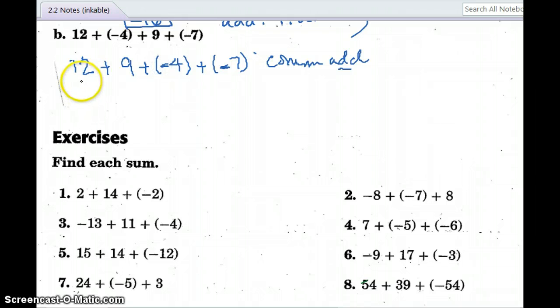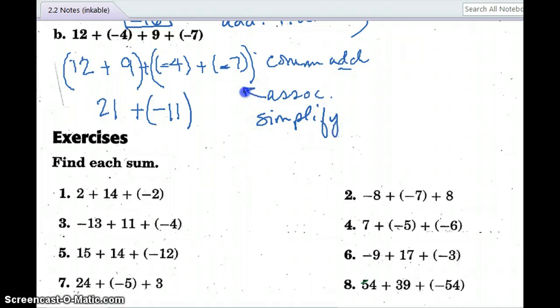Commutative property of addition. Yes, I'm adding, even though there's negatives there, I'm adding negatives. Now we can use the associative property. Let's associate 12 with 9 and negative 4 with negative 7. So the associative property allows me to group this way. And 12 plus 9 is 21 plus a negative negative. I add 4 and 7 is 11, and I'm going to keep the negative because they were both negative.